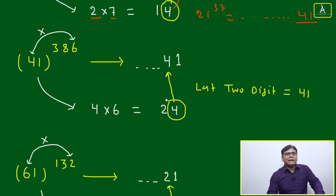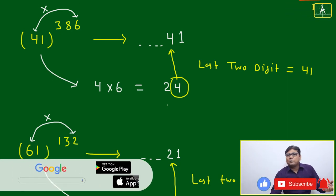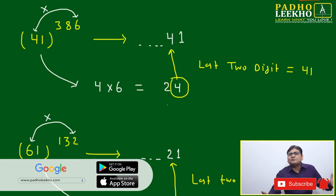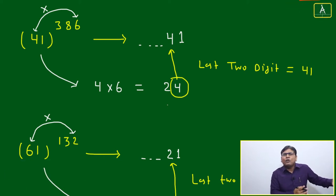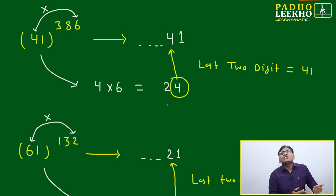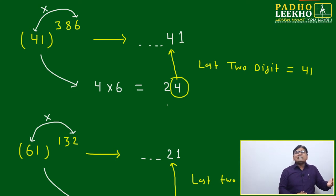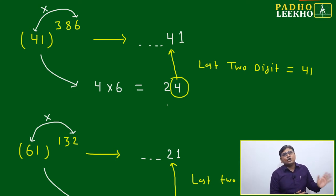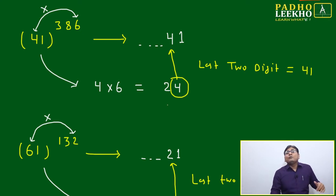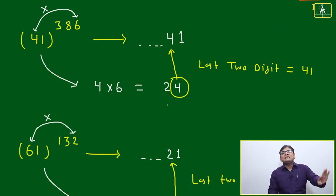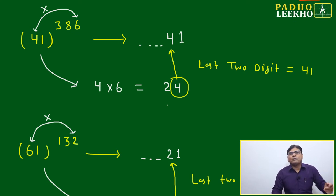Let's take another example to build confidence. The rule applies regardless of how many digits the base or power has — whether it is 3, 4, 5, or even 10 digits. This shortcut is developed based on a mathematical concept, not by fluke. As the power increases to 5, 6, or 10 digits, the rule remains valid. Unit digit is always 1; multiply the second last digit of the base by the unit digit of the power.